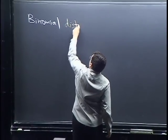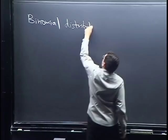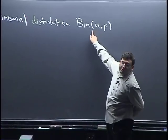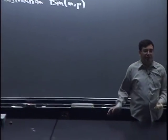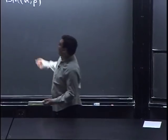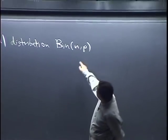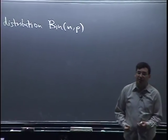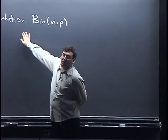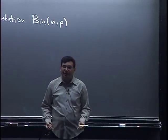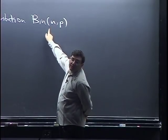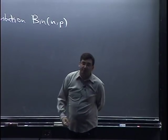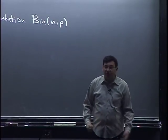We write it as Bin(N, P) for shorthand. It has two parameters, N and P. If you change the parameters, then you have a different distribution — it's still called a binomial distribution. Strictly speaking, there is not just one binomial distribution; there's a whole family. N is any positive integer, and P is any real number between 0 and 1.